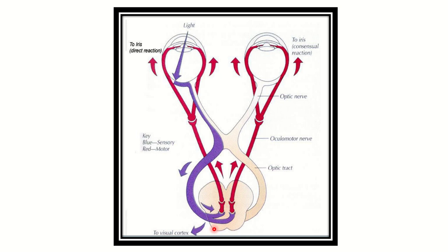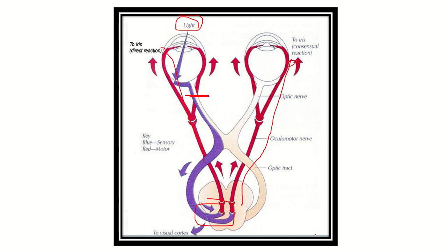Looking at another diagram, it is very clear that light goes to the retina, the signal goes to the visual cortex, and from the visual cortex two signals arise — one to the same eye and another to the other eye. If the optic nerve is damaged, light cannot pass to the visual cortex, so there is no direct light reflex and there is no consensual light reflex to the other eye — both will be lost.